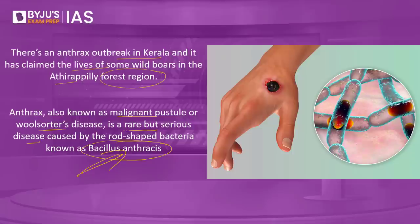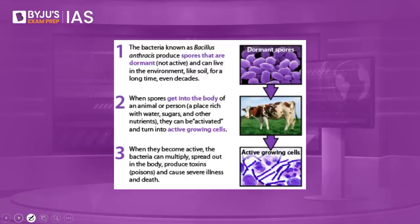How do animals get infected with this bacteria? Domestic and wild animals become infected after breathing in or ingesting spores in contaminated soil, plants, or water. The bacteria Bacillus anthracis produces spores that are dormant — meaning not active — and can live in the environment like soil for a long time, even decades. When these spores get into the body of an animal or a person, they can be activated and turn into active growing cells.